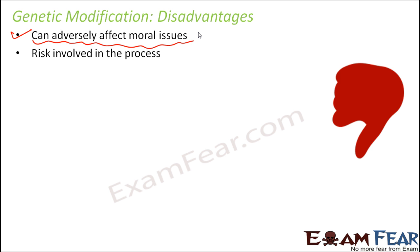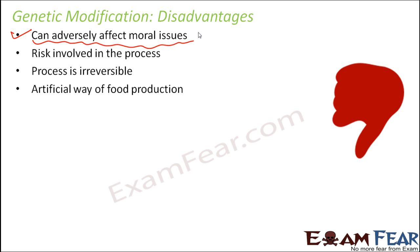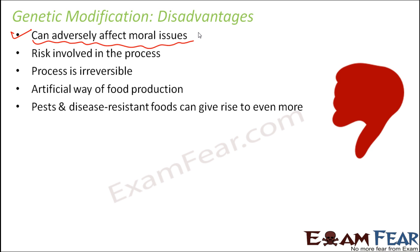Another disadvantage is the risk involved: when we insert a new gene into a target organism, we really don't know what is actually happening inside, so there can be adverse effects — the insertion of a new gene can adversely affect the functioning of a normal gene. The process is also irreversible, so once you have genetically modified an organism you cannot reverse it. Additionally, it is an artificial way of food production, and pest-resistant foods can give rise to even more harmful organisms since their inbuilt pesticides and insecticides are even more difficult to destroy.